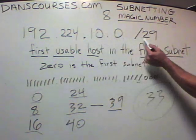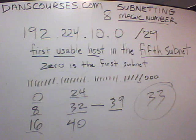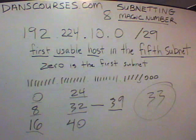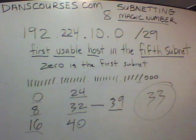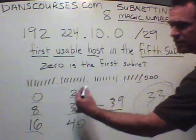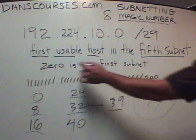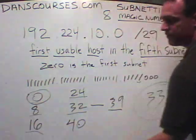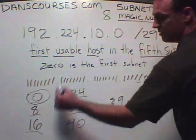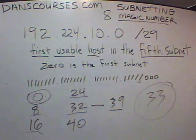33 is the first usable host in the fifth subnet, if this network has been subnetted to a slash 29. You will have to answer a question like this guaranteed on the test. We can also tell you the broadcast address, the network address, or any other subnet. And note: if zero is not allowed as the first subnet, then the first subnet becomes 8 — but we said zero is allowed here, so we start there.